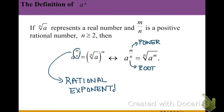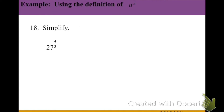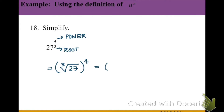The question to ask yourself is: what is the power, and what is the root? For example, simplifying 27 to the 4/3 power — since 4 is on top, it is the power, and since 3 is in the denominator, it is the root. So this is the same as taking the cube root of 27, all raised to the 4th power. The cube root of 27 is 3, so we take 3 to the 4th power and get 81. You can type this into your calculator to confirm.